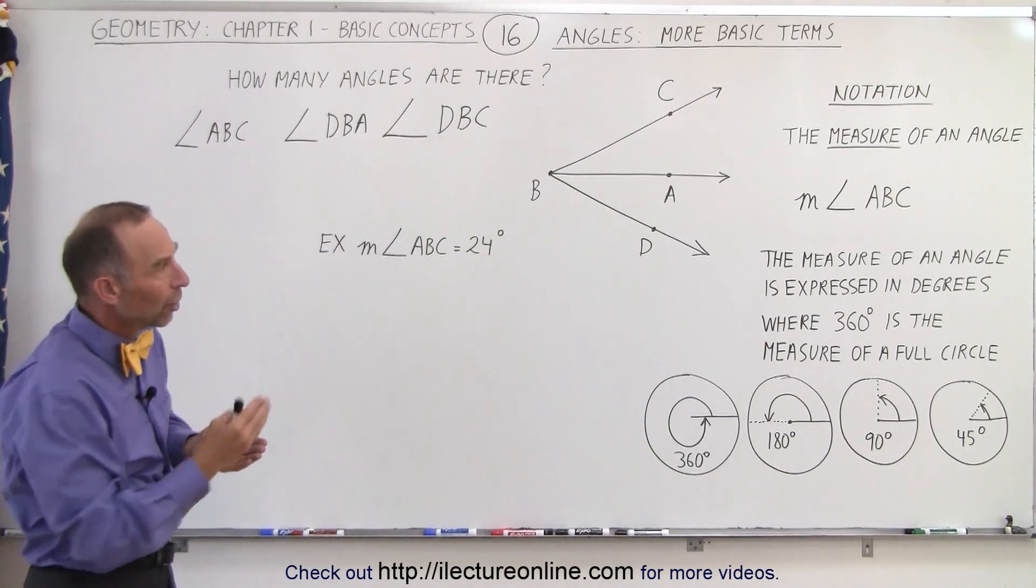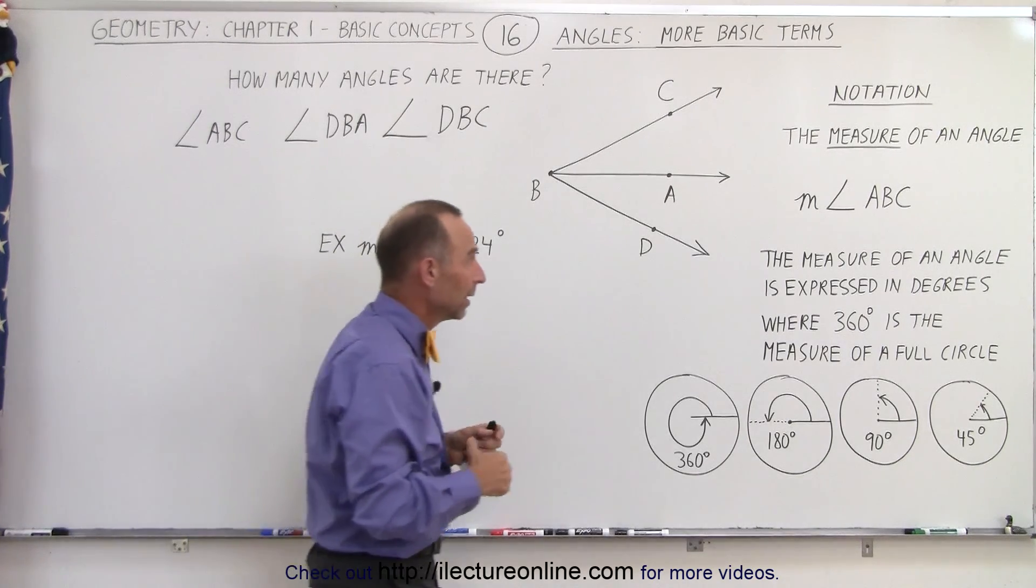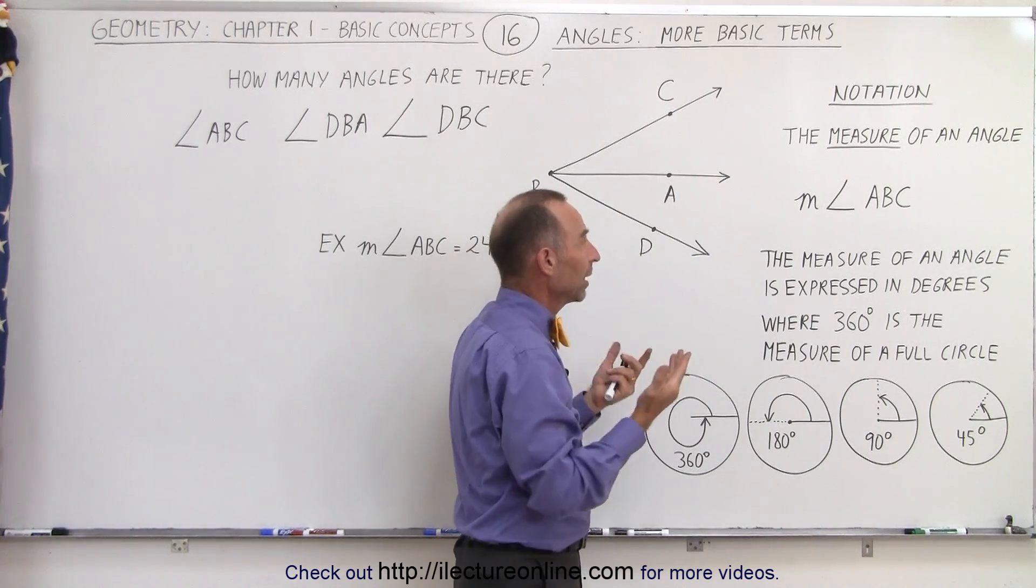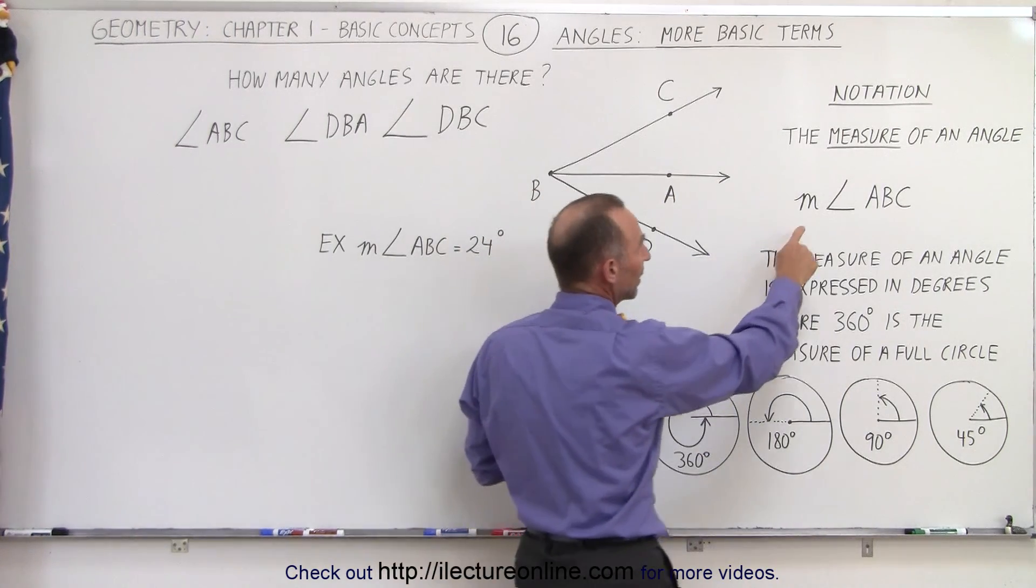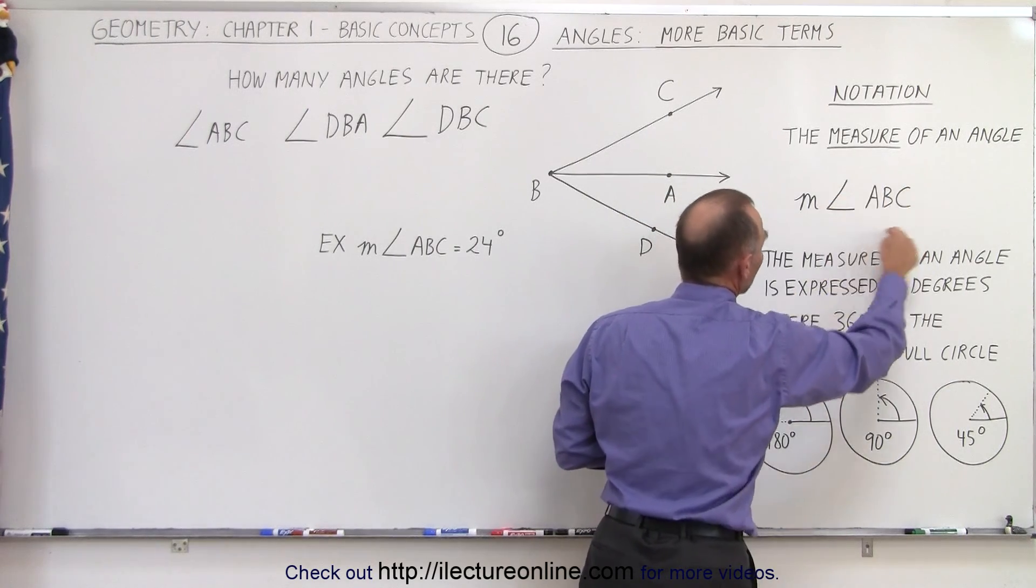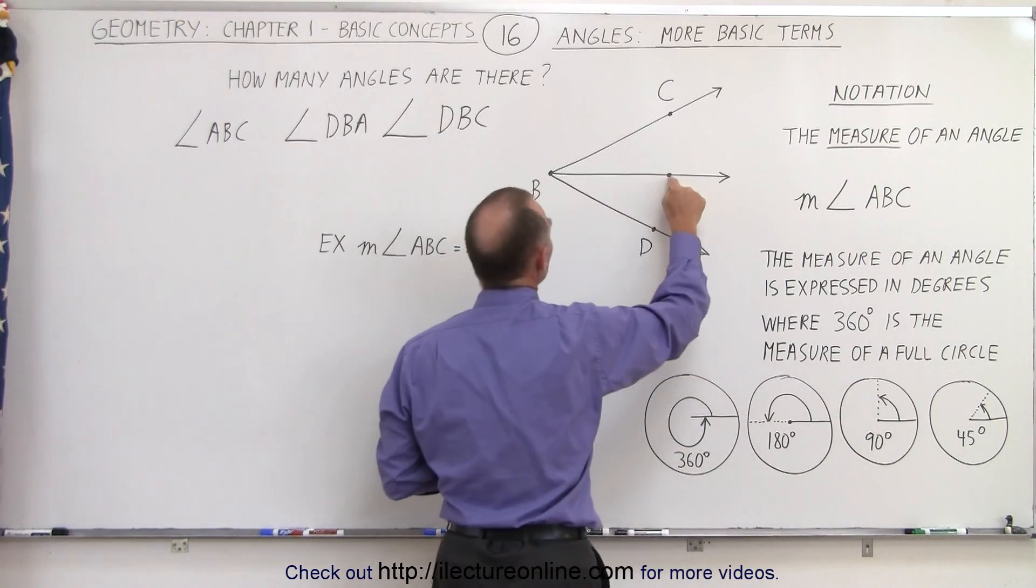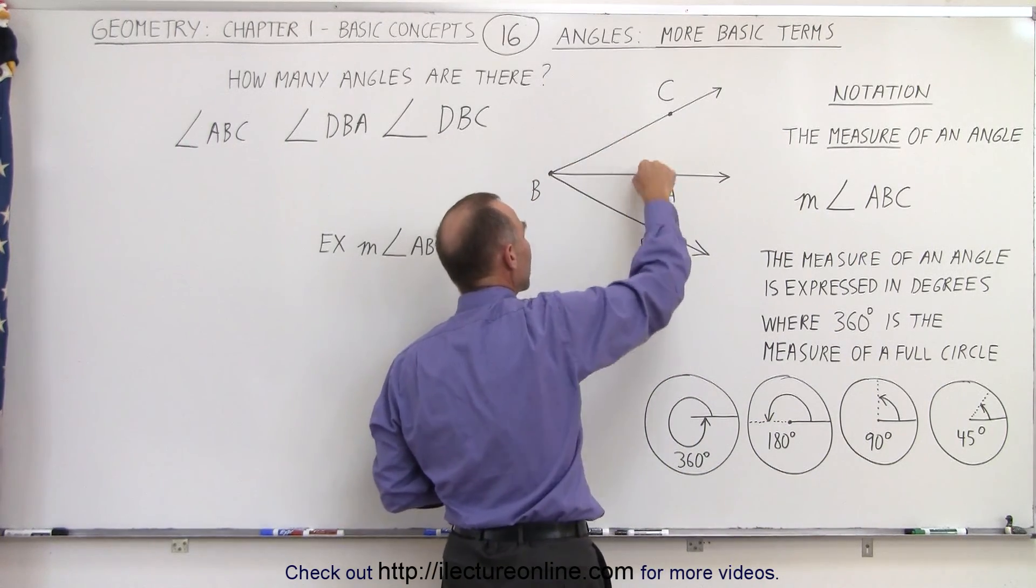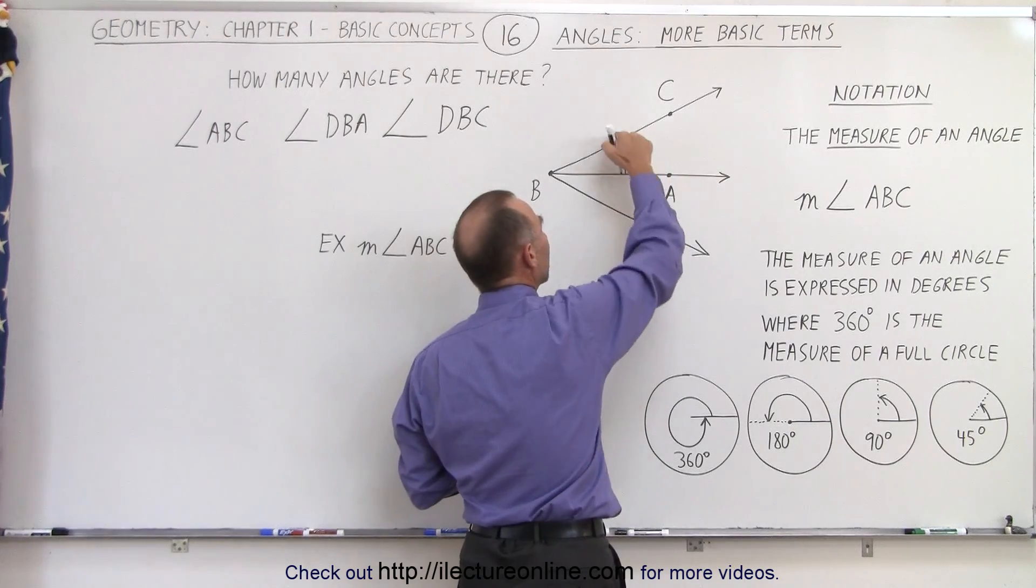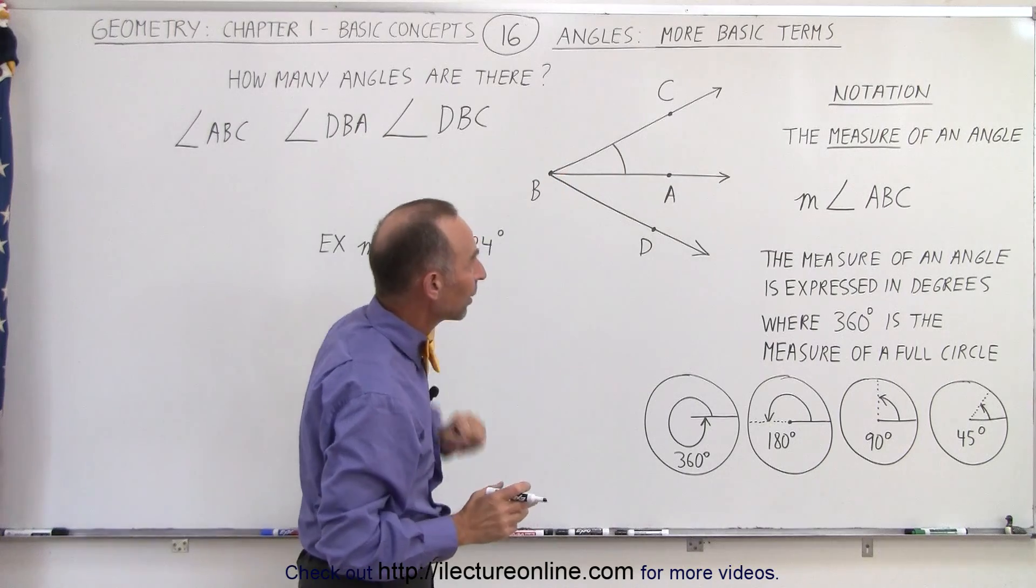Let's now talk about the measure of an angle, and that's how we say it in geometry. It means how many degrees are there between those two rays that we're considering. Here we write M with the angle symbol ABC—this is the notation for angle ABC. That would be from A to B to C, this angle right here. We could put a little curved line in there that indicates there's an angle, and that represents the measure of that angle.